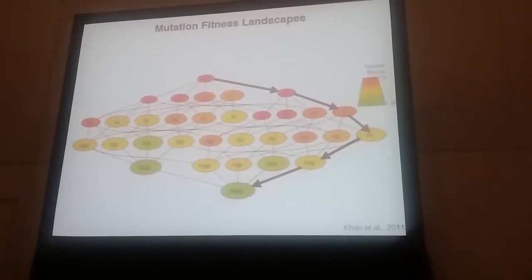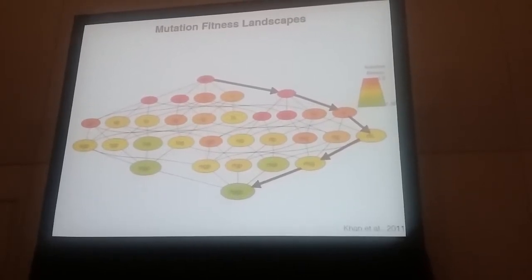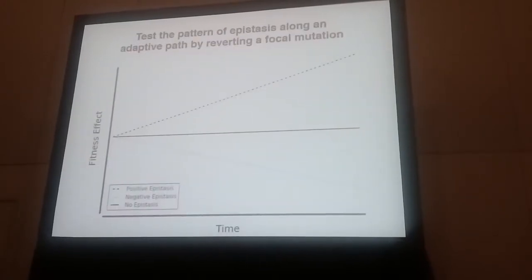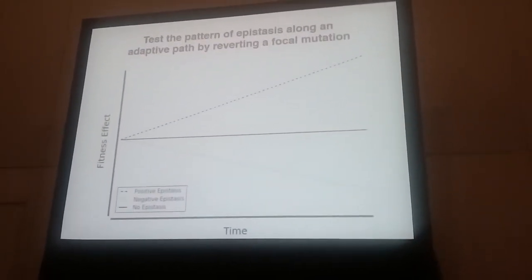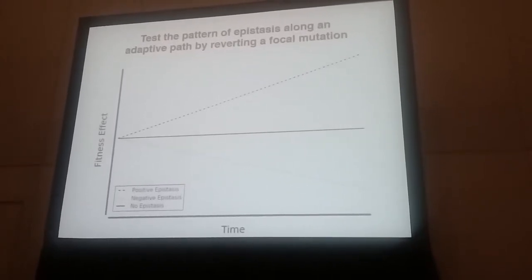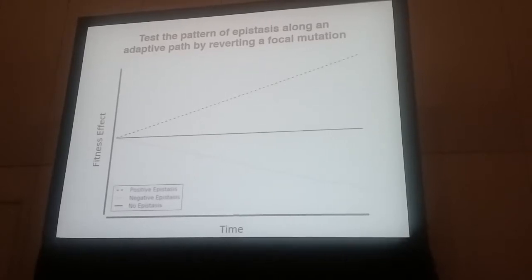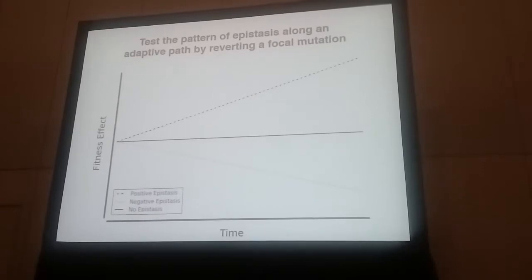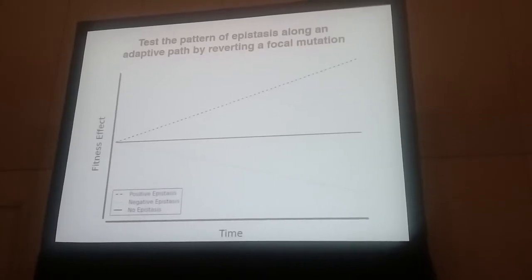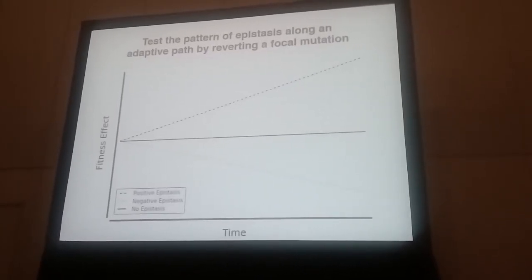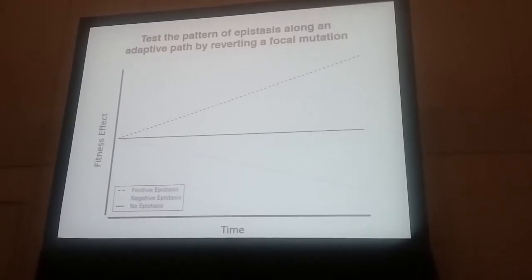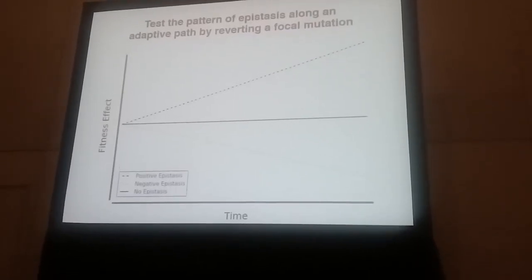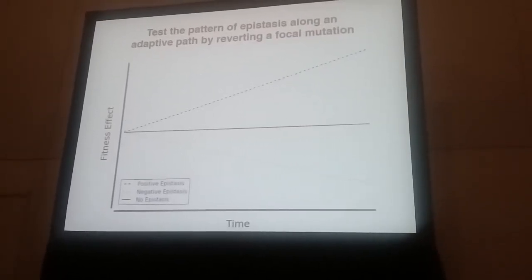What I'm trying to do is look at how these interactions change in order and in replication. I can do that by reverting a focal mutation — one that occurs ideally early in adaptation. Imagine a mutation that arises at an early time point with a given beneficial fitness effect, and you get subsequent fixations over time. If it doesn't interact at all with any of those mutations, its effect remains constant. If it interacts negatively, its initially beneficial effect would start to decline. And if it interacts positively, reverting that mutation would not only lose the initial beneficial effect but also those positive interactions.